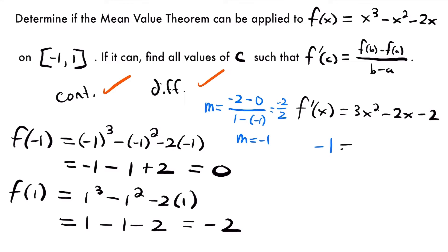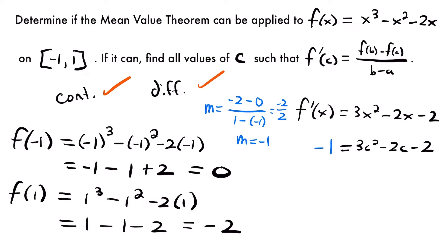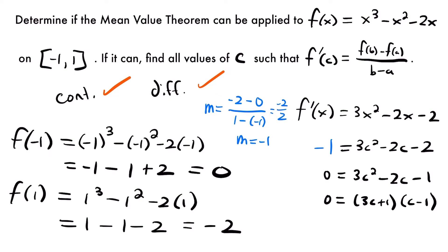Now that we have calculated our slope, we can solve for the values of c where the slope at those values of c equals the slope between our two endpoints, which is negative 1. So we're going to have negative 1 is equal to our derivative, and we'll switch our x's to c's. So we'll have 3c squared minus 2c minus 2. To solve for our values of c, we want to have a 0 on one side, so I'm going to add 1 to both sides. We'll have 0 equals 3c squared minus 2c minus 1. Now we have a quadratic that we would need to factor in order to solve for c.